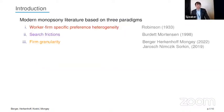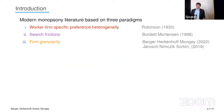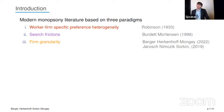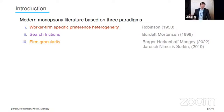The modern monopsony literature is based on three paradigms. To generate labor market power, they often rely on worker firm-specific preference heterogeneity. So if you value a job over and above the wage that's paid, firms could potentially pay you less than your marginal product.